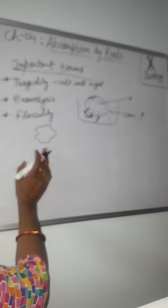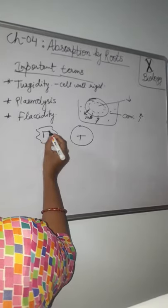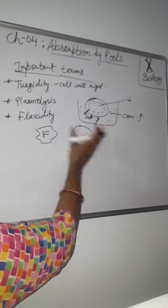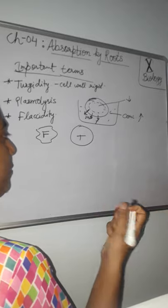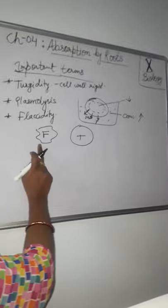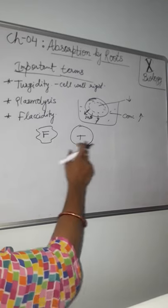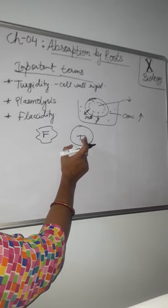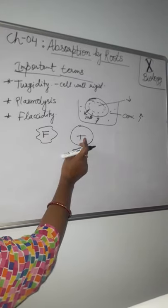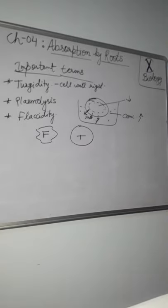Flaccidity is the condition in which the cell content is shrunken and the cell is no more tight. The cell is then said to be flaccid. This is a flaccid cell with no water, and this one is a turgid cell full of water where absorption cannot occur anymore.